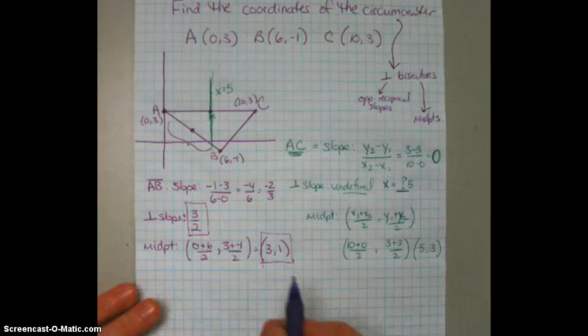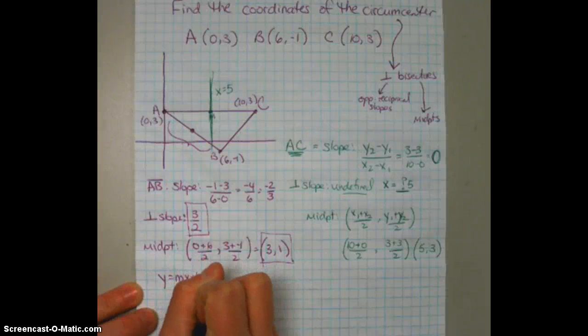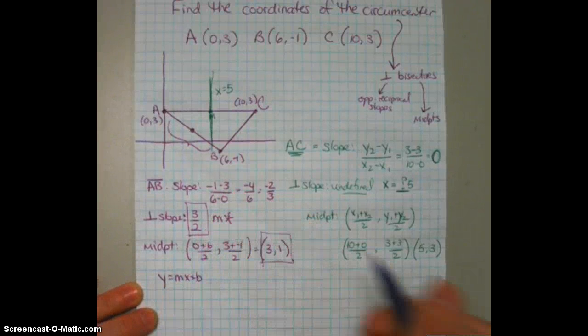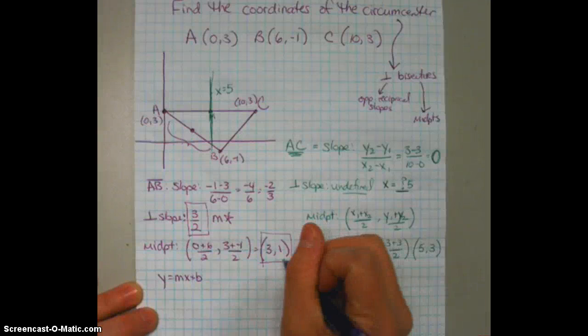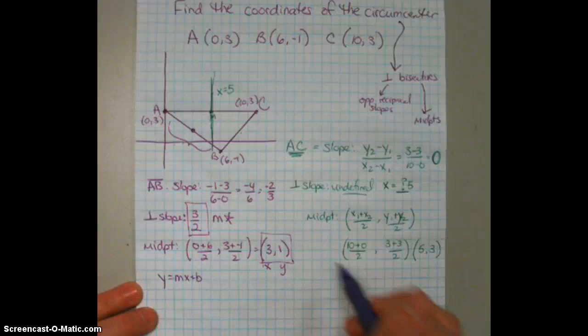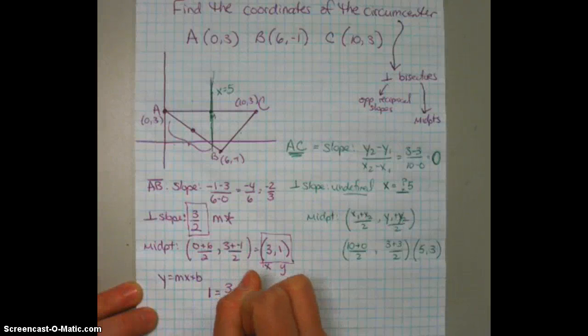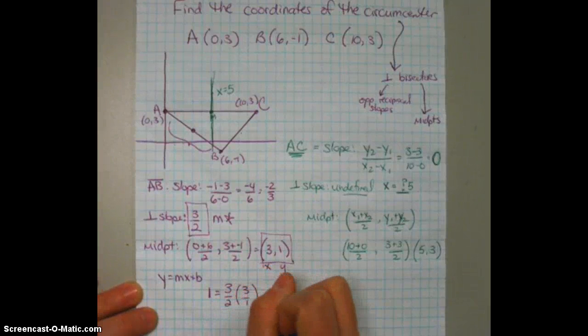Okay. So we're going to be using y equals mx plus b, where this is the m right here at that perpendicular slope. And this is your x and y, which is the midpoint that the line passes through. So we're going to substitute in. We get 1 equals 3 halves times 3 over 1 plus b.